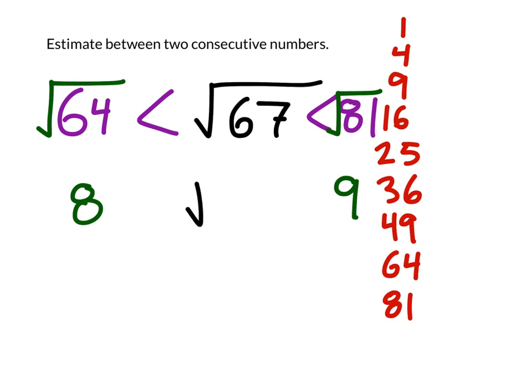Meaning that this square root of 67 is greater than 8 but less than 9. So the two numbers it's between would be 8 and 9.